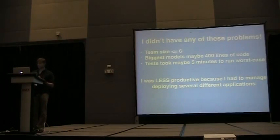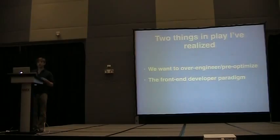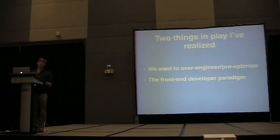There are two things in play that I realized. One is we just wanted to over-engineer and pre-optimize and look ahead into the future. For example, one part of our application was payments processing, so you figure you can extract that out into its own application so that down the line you could use the same payments application for other things. Or maybe you want to separate out a templating part of the application to reuse templates for other things. But business requirements change all the time and you actually never get there — you never end up using the thing that you thought would be so great.